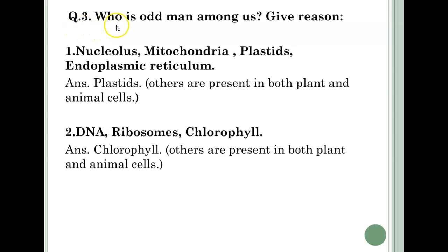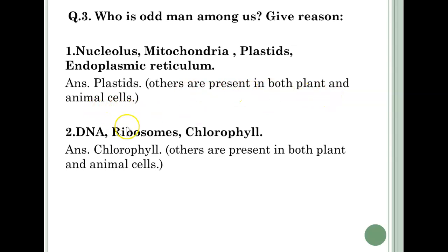Question number 3 — Who is the odd man among us? Give reasons. First group: Nucleolus, Mitochondria, Plastids, Endoplasmic Reticulum. Answer: Plastids, because the others are present in both plant and animal cells. Second group: DNA, Ribosomes, Chlorophyll. Answer: Chlorophyll, because the others are present in both plant and animal cells.